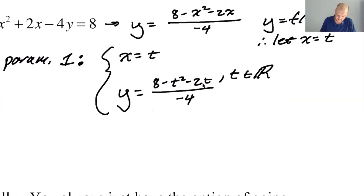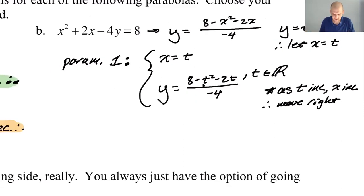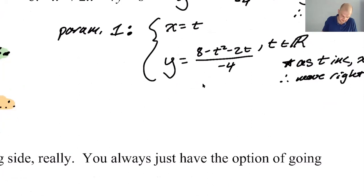So T is an element of the reals. So we don't need to write it down, but as T increases, X increases, which means you're moving to the right. You're sort of like generally moving to the right. As T increases, X is going to increase. And then if we want to switch that, let's do the other thing.